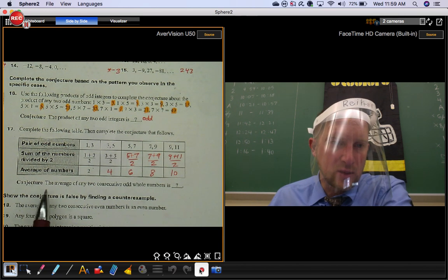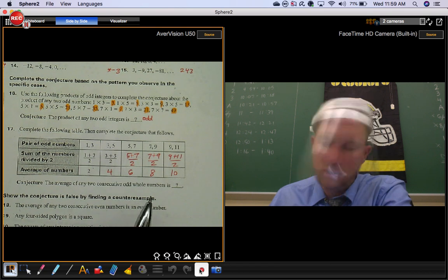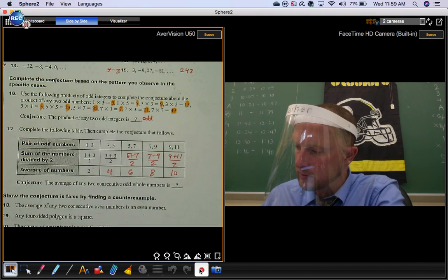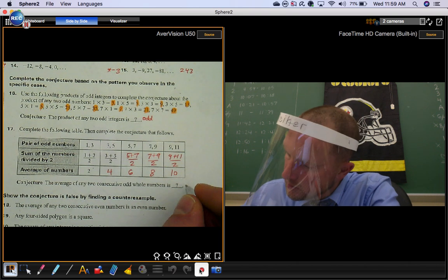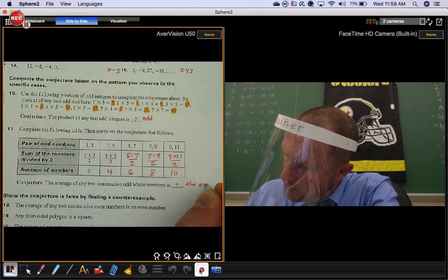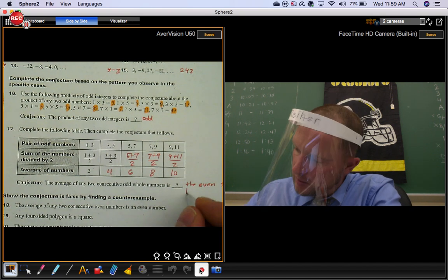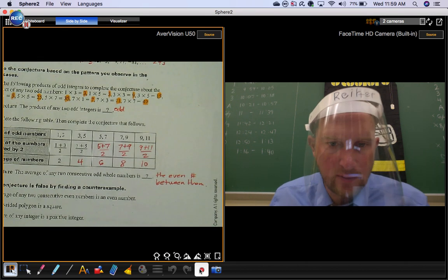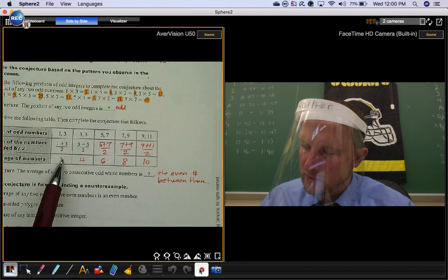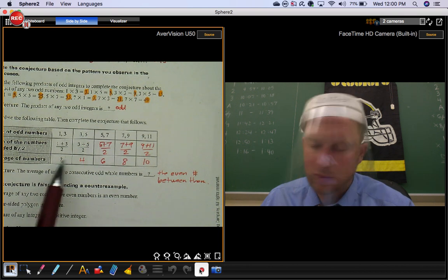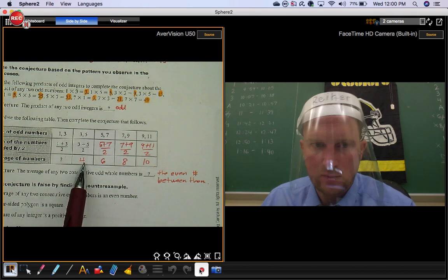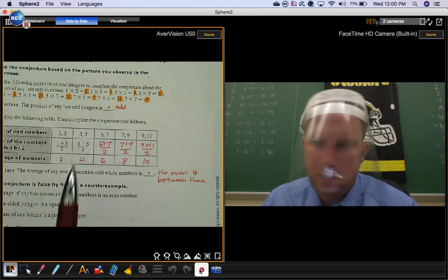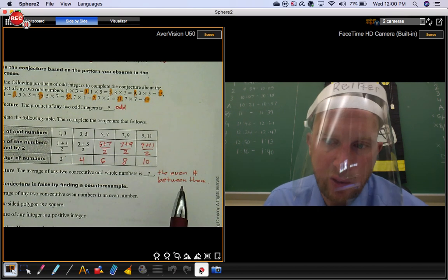So a conjecture you could make here would be the average of any two consecutive odd whole numbers is, well you could say a bunch of things here. You could say it's even. You could also say it's the even number between them. So notice how you have 1 and 3. What's the even number that's between them? 2. 3 and 5. What's the even number between them? 4. 6 is between 5 and 7. 8 is between 7 and 9. 10 is between 9 and 11. So just saying an even number isn't wrong, but that's probably better.